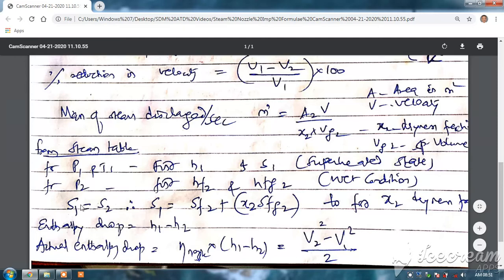And using the relation s1 is equal to - because constant entropy drop - s1 is equal to s2, you can find s1 is equal to sf2 plus x2 into sfg2. We know s1, we know sf2 and sfg2 all from the steam table, so you can find x2, that is the dryness fraction of the steam.